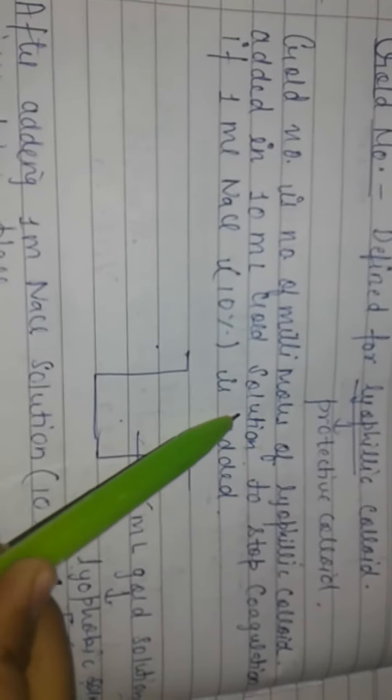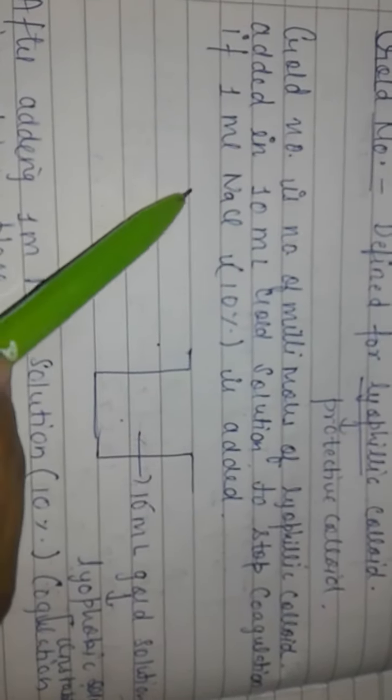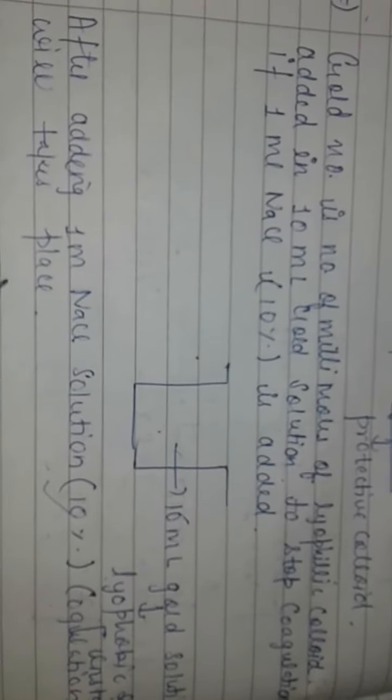...of millimoles of lyophilic colloid added in 10 ml gold solution to stop coagulation if 1 ml NaCl 10 percent is added. So this is what happens guys - after adding 1 ml NaCl solution 10 percent, coagulation will take place.